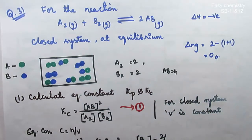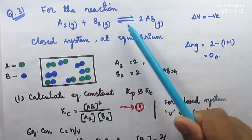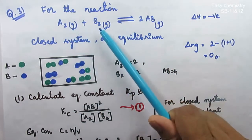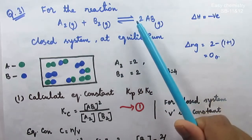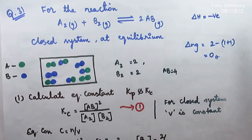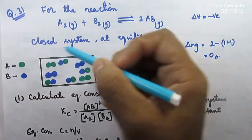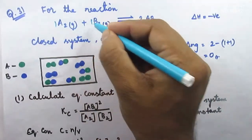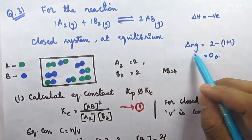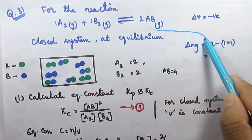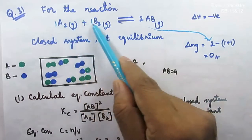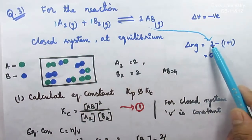Based on this picture, this is an equilibrium process: A₂ reacts with B₂ to give AB. Here, A₂ is number 1, B₂ is number 1, and AB is number 2. Delta nG equals number of moles of product minus reactant: 2 minus 2 equals 0.